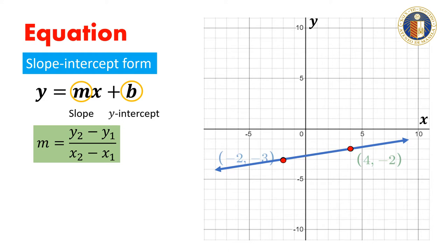Let the point (-2, -3) be our (x₁, y₁), and the point (4, -2) be our (x₂, y₂).